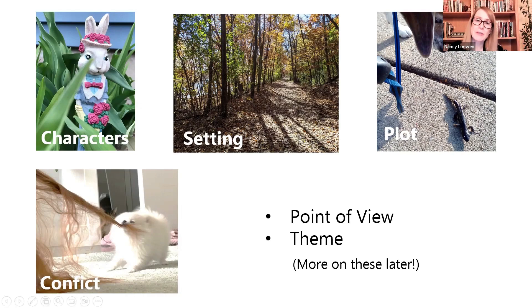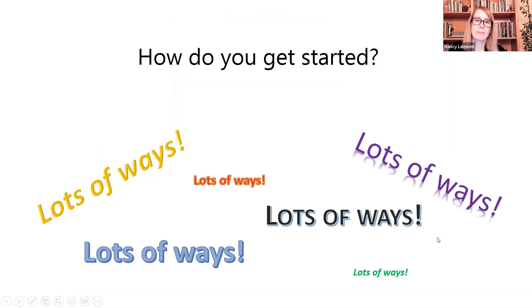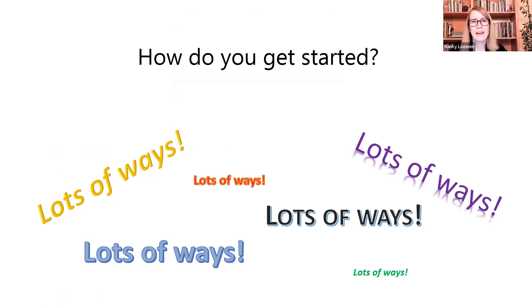A couple of other elements of story are point of view and theme, and we're going to talk a little bit more about those later. So you know all that stuff — what goes into a story? How do you get started? Well, there are lots and lots of ways. That's the cool thing about writing, and really about any creative undertaking. There is no one right way to do it. Everybody needs to find their own process, their own way of doing it. There's a lot of freedom and flexibility in writing, and I think that's pretty cool.